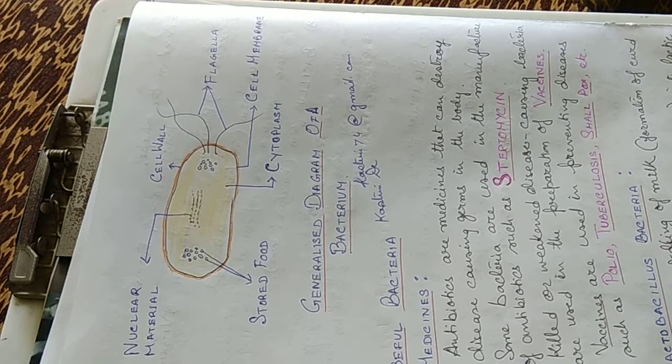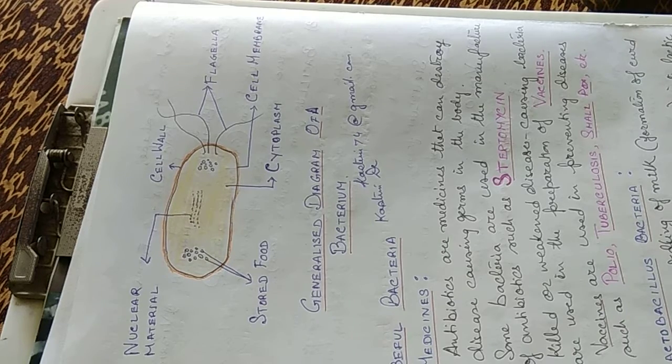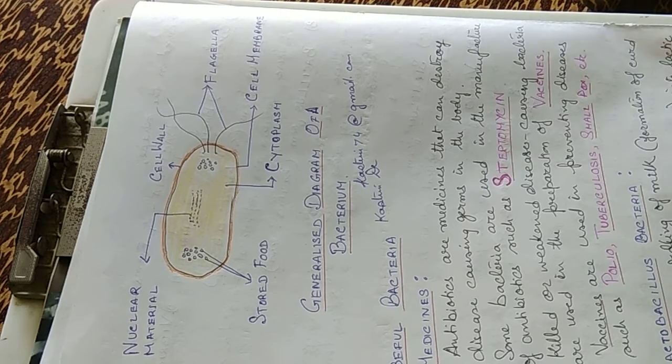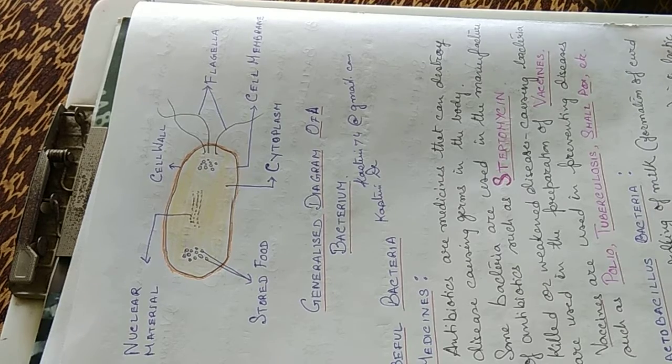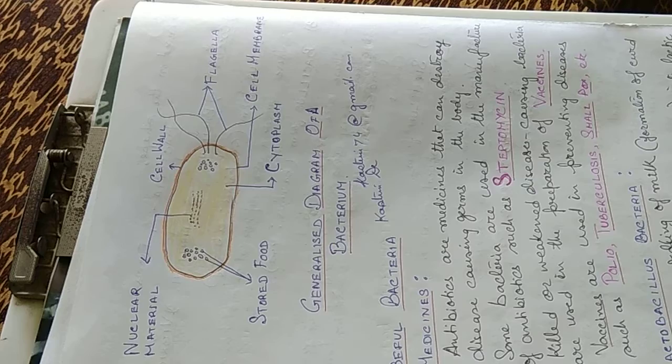Lactobacillus bacteria are used for curdling of milk, that is formation of curd from milk. They convert the milk sugar that is lactose into lactic acid giving the sour taste to the curd.